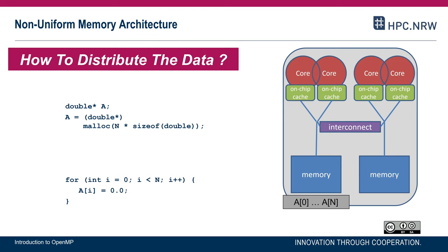Let's think of four kilobyte chunks for now. For the first touch — meaning the first time we write to A[0] — the operating system will create a page, put it into physical memory, and then the application writes to A[0], A[1], and so forth. At some point A[N] will exceed the page boundary, and the OS creates the next page. So malloc only makes a mental note; it is during initialization that data is actually allocated and placed in physical memory.